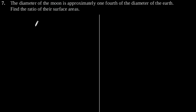Exercise 13.4 question number 7: The diameter of the moon is approximately one-fourth of the diameter of the earth. Find the ratio of their surface area. So as given in the question, the diameter of moon is approximately one-fourth of the diameter of the earth.